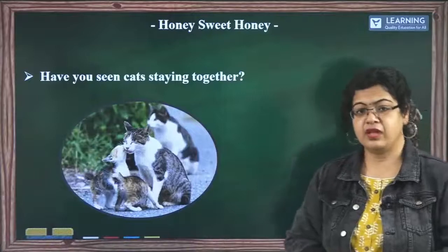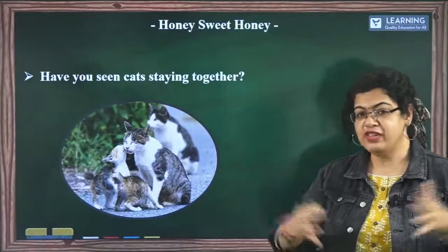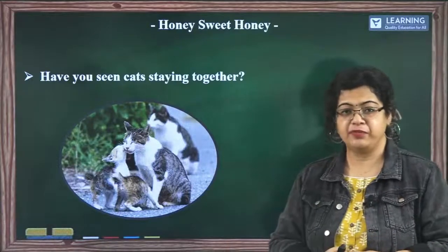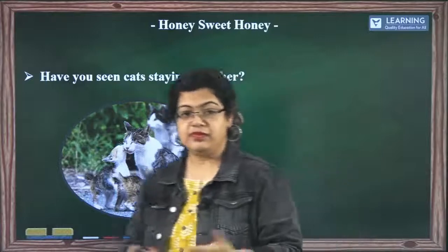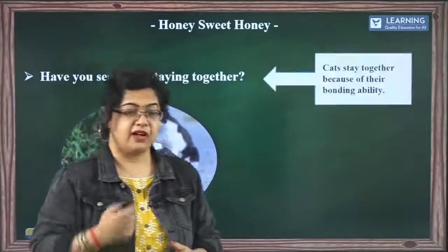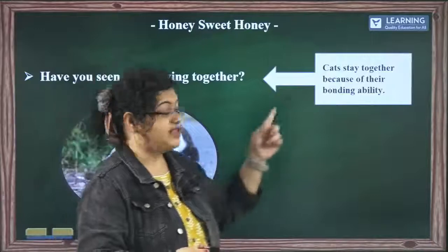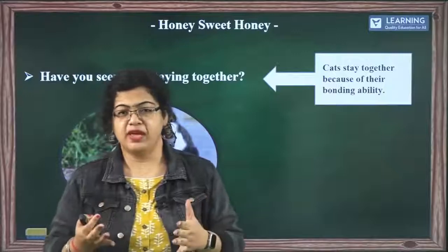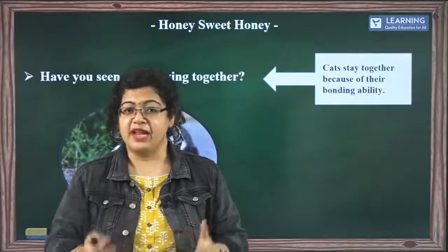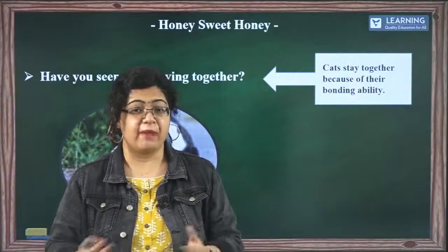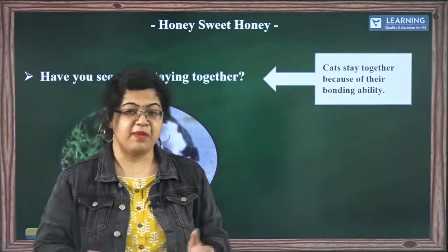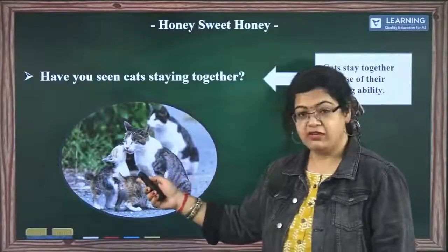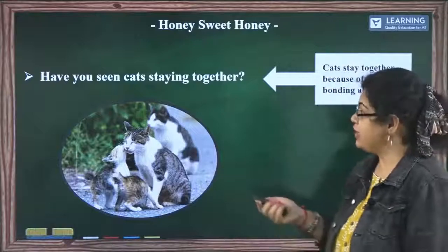Have you ever seen in your neighborhood all the cats coming together and rubbing their body towards each other? Why is that so? It's because of their bonding ability — they stay together. Even when we feel we want to be cozy and loved, we go and rub our body with our parents too, isn't it? So the same ability is with the cats.